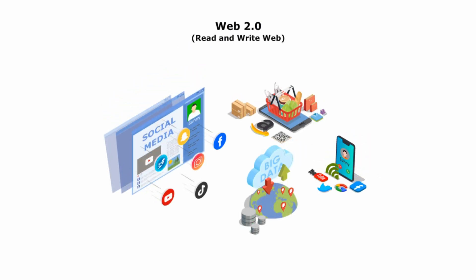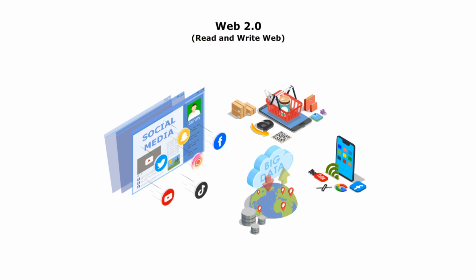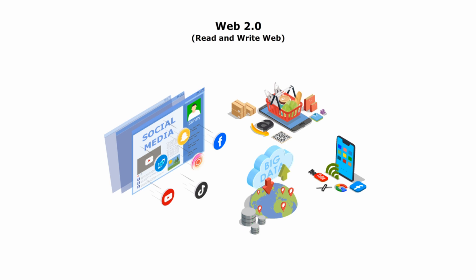Web 2.0 is the second generation of the World Wide Web. It is a read-and-write web. Web 2.0 enables interactive, collaborative, and user-generated content. Web 2.0 websites include social media, blogs, wikis, and other collaborative tools that enable users to participate in the creation and sharing of content.